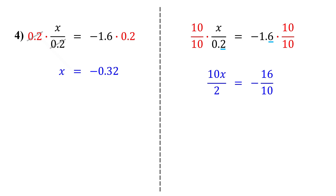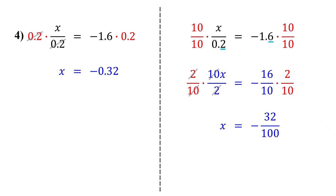Now to isolate x, multiply both sides by the reciprocal of 10 over 2. On the left, the fractions cancel out, leaving x by itself. On the right, we get negative 32 over 100. And dividing by 100 just moves the decimal point two places to the left.